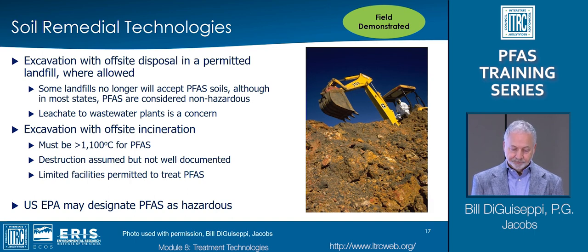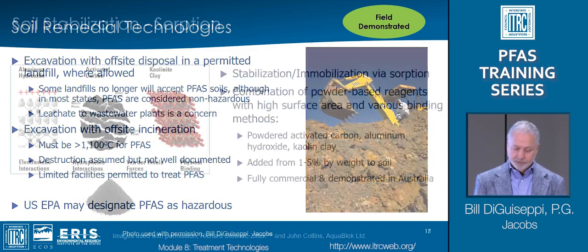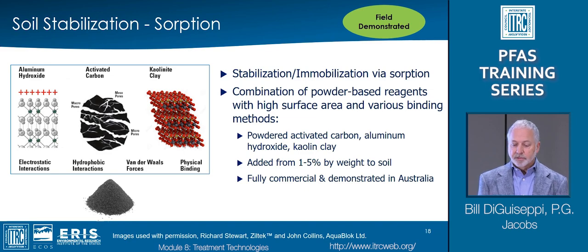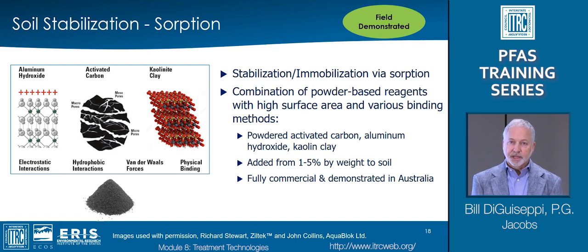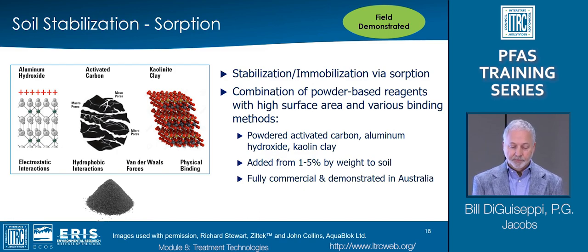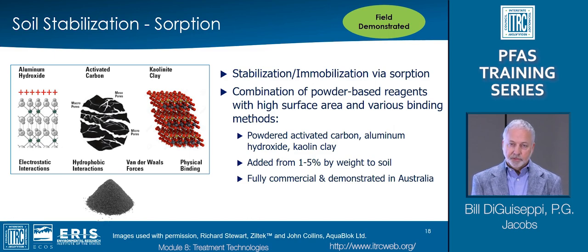Further data collection is critical to answer this question. One thing to note is the US EPA is considering designating PFOS and PFOA as hazardous substances under CERCLA, which could affect incineration and disposal options. Excavation and stabilization to reduce leachability through sorption is also a field-demonstrated technology. Fixation by conventional soil stabilization chemicals, such as Portland cement, is not very effective for PFAS. Therefore, proprietary blends of carbon, minerals, and clays have been developed and demonstrated at sites in Australia and Europe. The field demonstrations have been dominantly using an Australian product, which includes aluminum hydroxide for electrostatic interactions, powdered activated carbon for sorption through hydrophobic interactions and weak van der Waals forces, and kaolin clay for physical binding. The resulting material has a large surface area combined with mixed molecular surface charges to bind PFAS efficiently at mixtures in the 1–5% range.